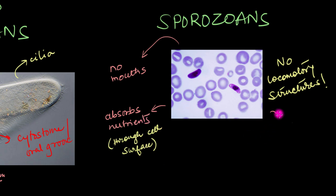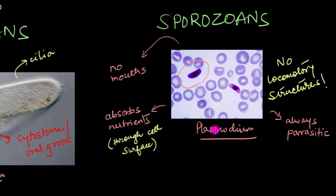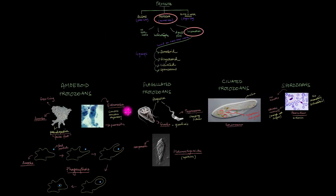Since all sporozoans are parasites, it's no surprise that some of them cause a variety of diseases in humans too. One such example is plasmodium — the very famous malarial parasite which has been wreaking havoc all around the world. Plasmodium causes malaria. And those are the four different kinds of protozoans you might find around you.